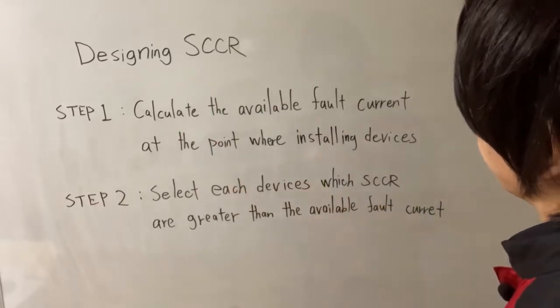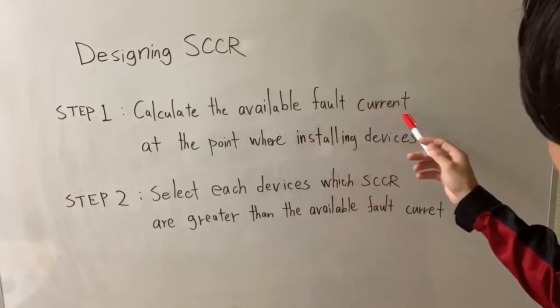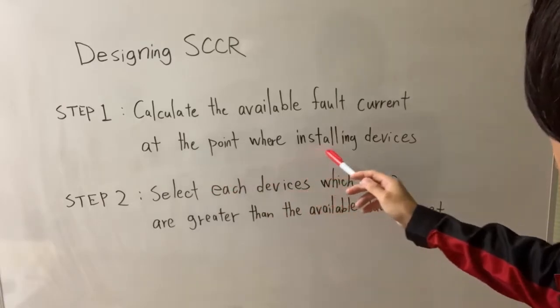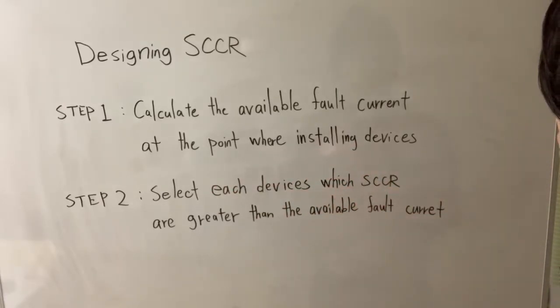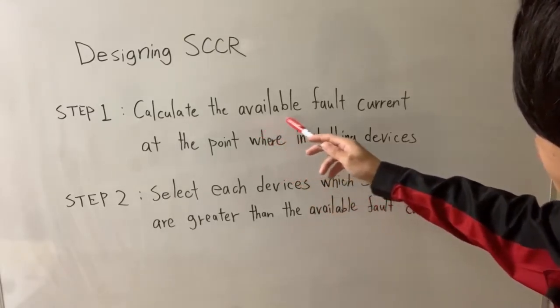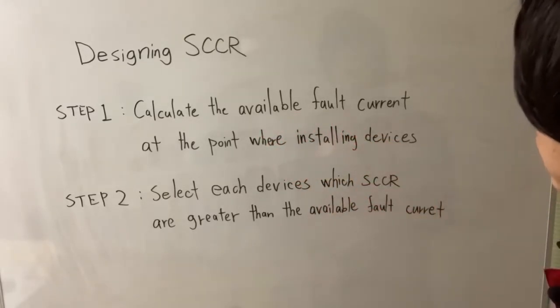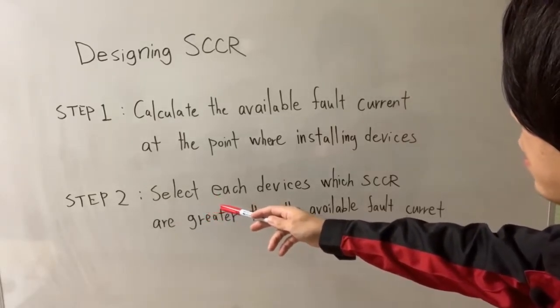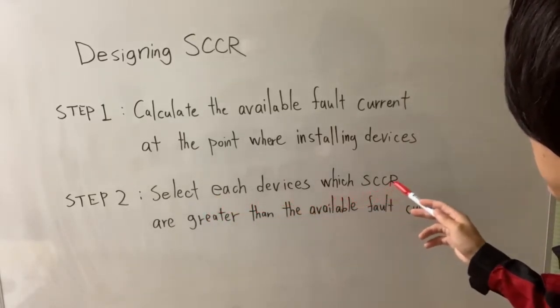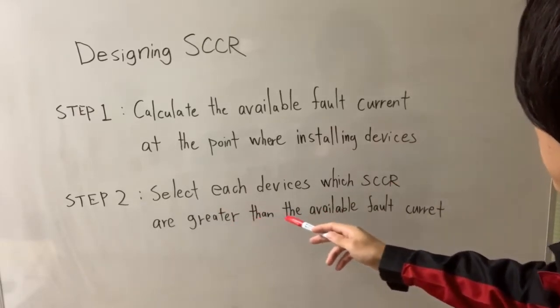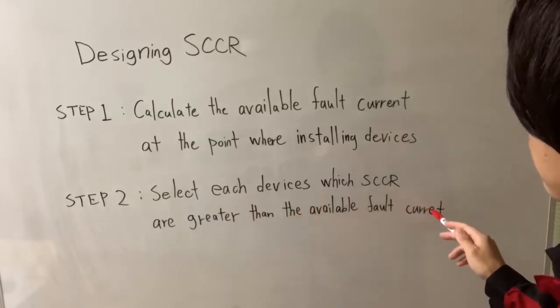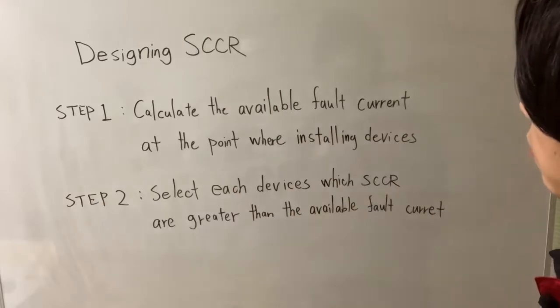Step 1: Calculate the available fault current at the point where installing devices. And in most of the cases, the maximum available fault current is a three-phase short circuit. And step 2: Select each device which SCCR greater than the available fault current that derived in step 1.